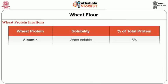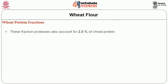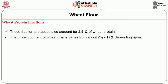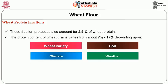The different wheat protein fractions are categorized depending on their solubility: albumin (water soluble), globulin (salt soluble), glutenin and gliadin which are soluble in dilute acid/alkali and 70 percent ethanol respectively. Proteases also account for 2.5 percent of wheat protein. The protein content of wheat grains varies from about 7 to 17 percent depending upon the variety, soil, climate, and weather.